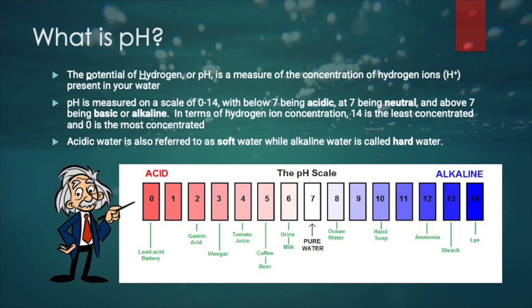One pH unit is 10 times stronger or weaker than the one above or below it. So a pH of 7 is 10 times more acidic than a pH of 8, but 10 times weaker than a pH of 6.